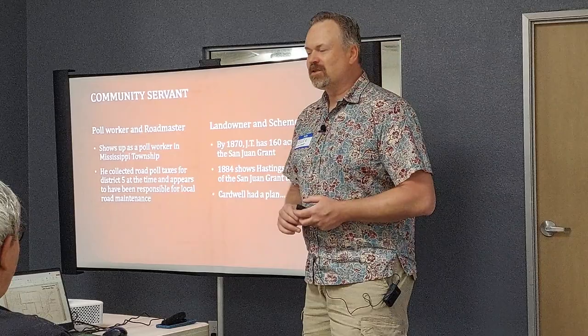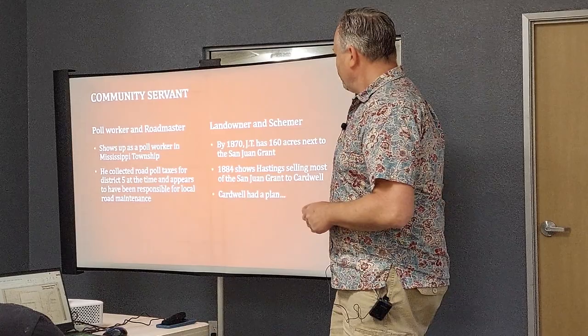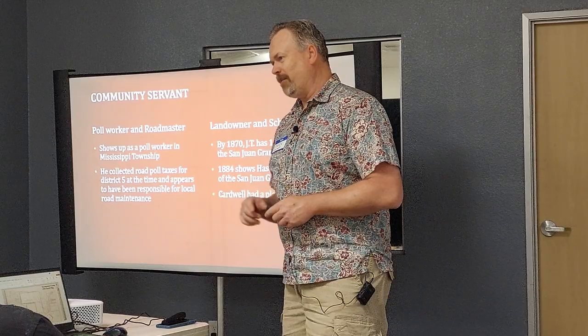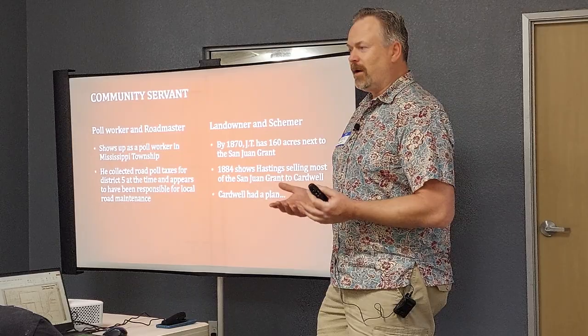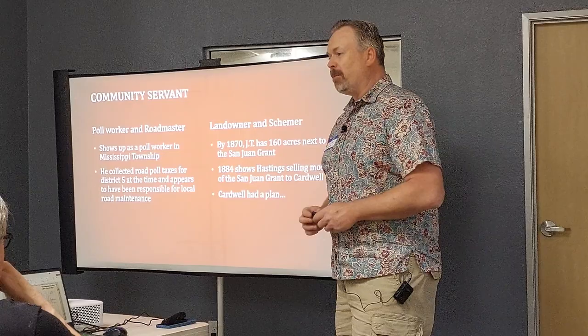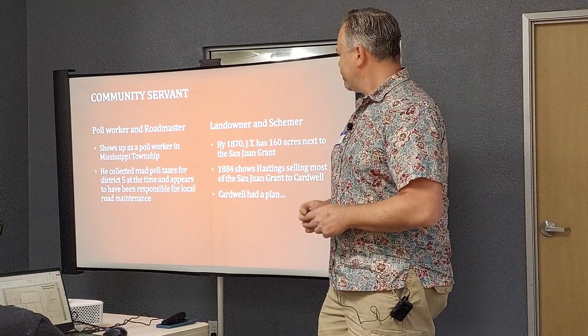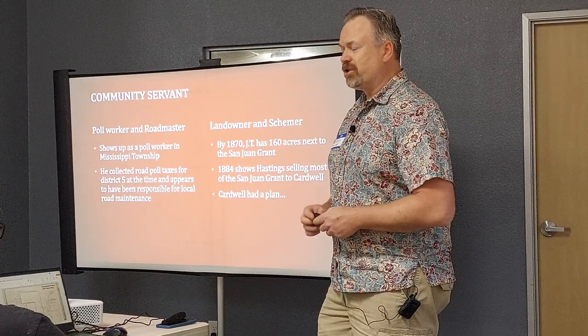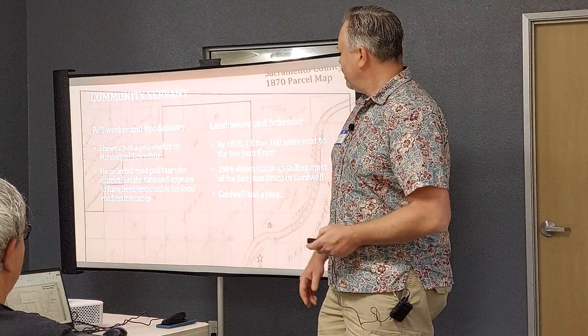On the right here, he was also very quickly a landowner, starting his own money-making schemes in 1870 - a year before he actually got his official citizenship. He's already showing up on the parcel maps as an owner of parcels near the San Juan Grant, or Rancho San Juan. Then in 1884, he ends up buying most of the San Juan Grant from Hastings, who owned it at the time, for $28,000 - a big chunk of change, but also a huge chunk of land. He had a plan for that.